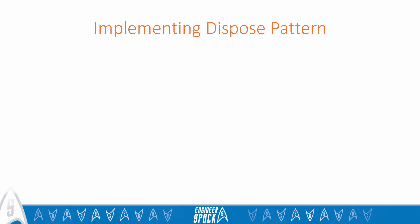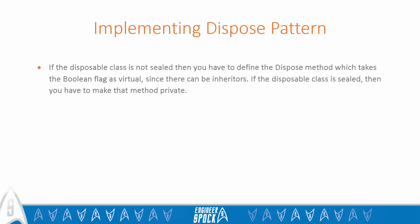Finally, a couple of rules when implementing disposal mechanisms. If the disposable class is not sealed, then you have to define the Dispose(bool) method as virtual, since there can be inheritors. If the disposable class is sealed, then you have to make that method private. The disposable object can also keep track of its state in a field like boolean isDisposed. You can check this flag in public methods and throw an ObjectDisposedException if a caller tries to use a disposed object. All these checks can be generated automatically by a library named 4D Janitor — check out the link attached to this lecture.